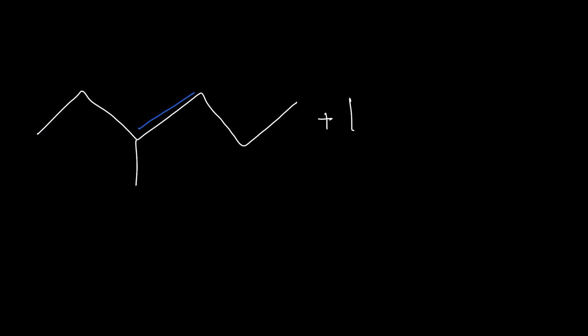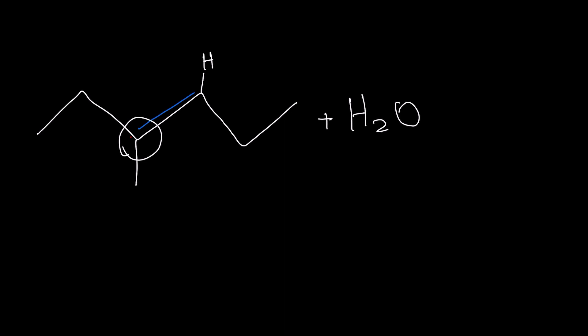Let's react this with water. What's going to be the major product in this situation? There are two carbons across the double bond — this carbon and this carbon. The carbon on the right has one invisible hydrogen, and in order to get to four bonds, the one on the left has zero invisible hydrogens.